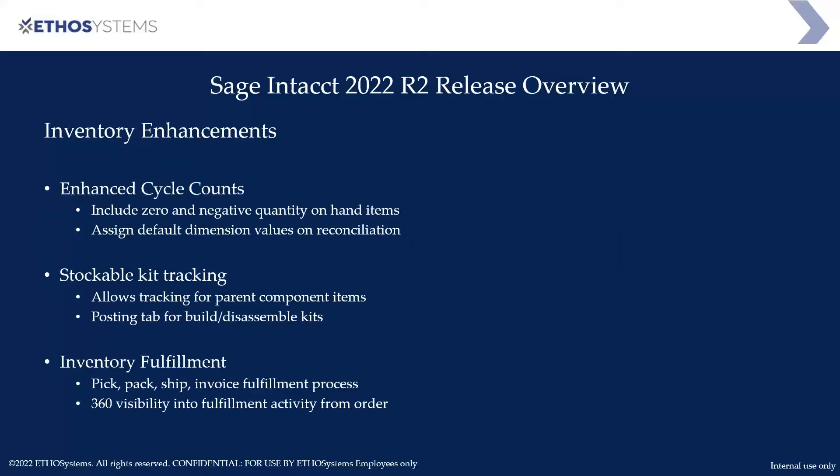In inventory, the enhanced cycle counts now allow you to include zero and negative quantity-on-hand items, and you can assign a default dimension value on reconciliations. With stockable kit tracking, you can track parent and component items on your kits, and there's a posting tab for build and disassemble kits.